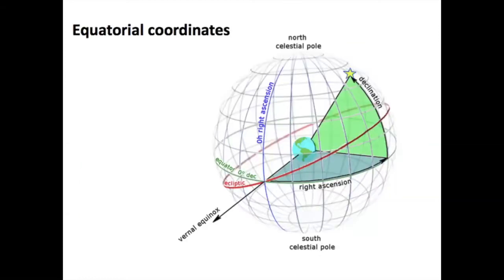That immediately defines equatorial coordinates. Equatorial coordinates are one of the most used coordinates in astronomy, and they are defined by two quantities: right ascension and declination. Right ascension is the equivalent of what longitude would be on Earth, and declination is the equivalent of what latitude would be on Earth. So, in the same way that you can define a position on Earth by giving longitude and latitude, you can define a point on the celestial sphere by giving right ascension and declination.